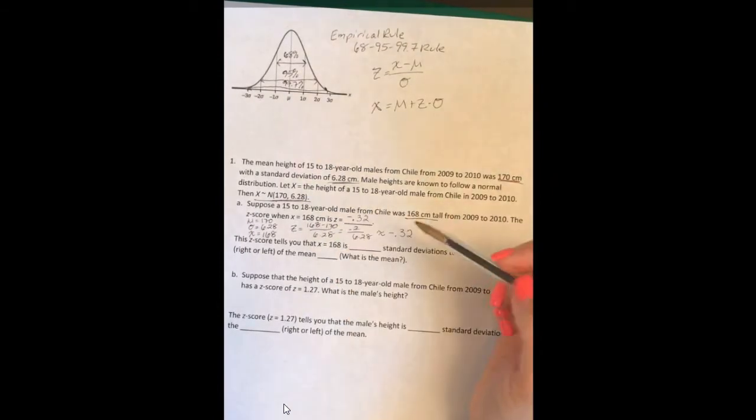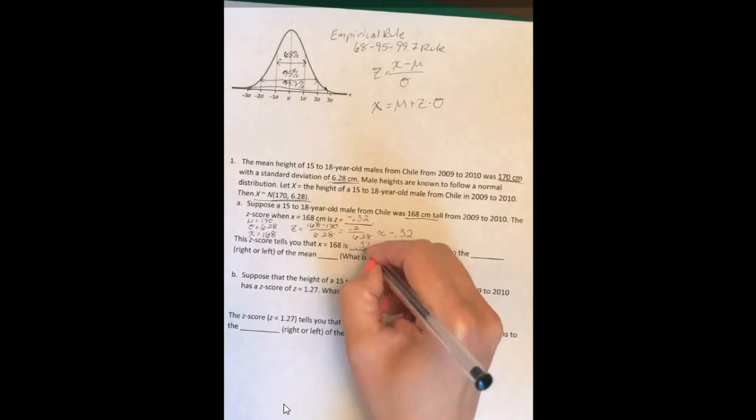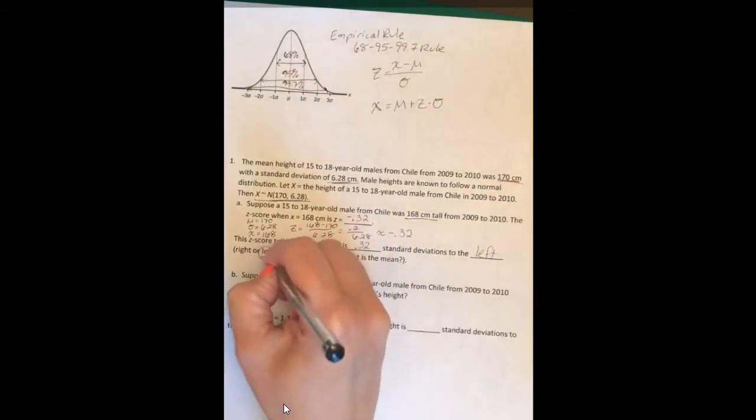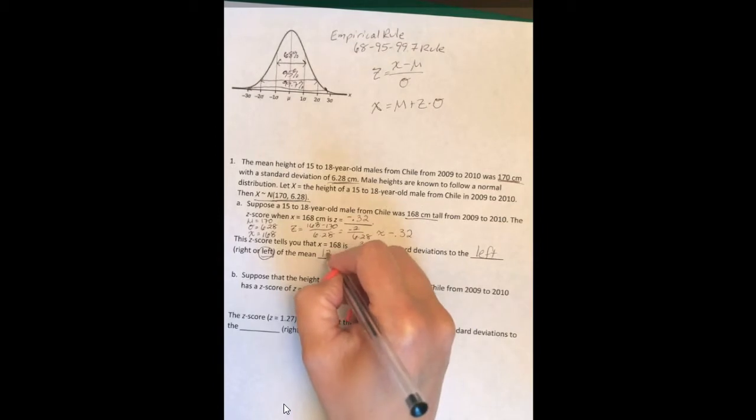So this z-score tells us that x equals 168 centimeters is 0.32 standard deviations to the left, because it's a negative, of the mean, which is 170.